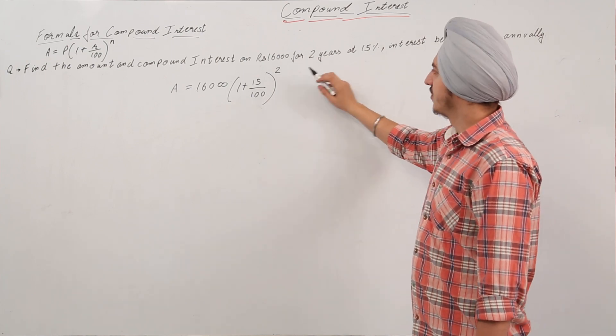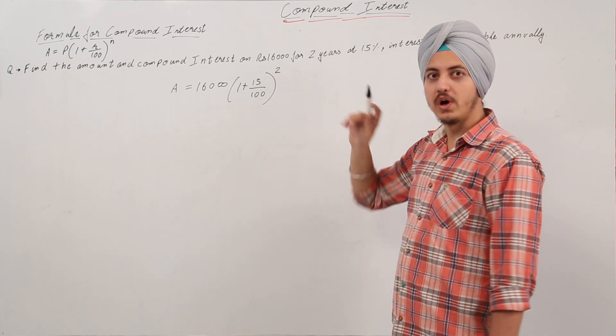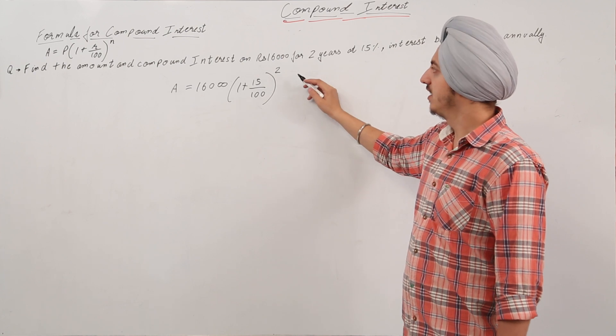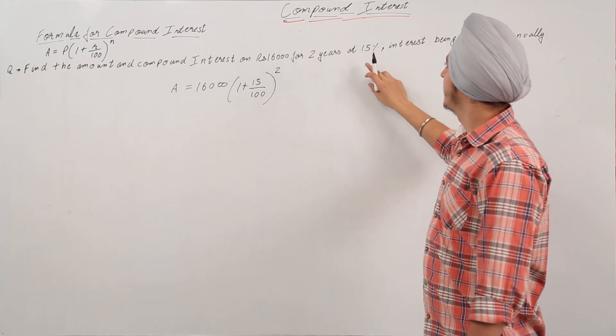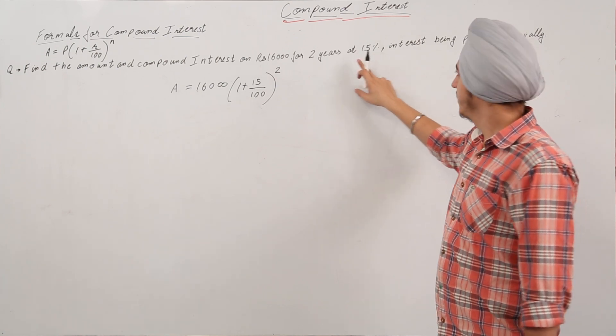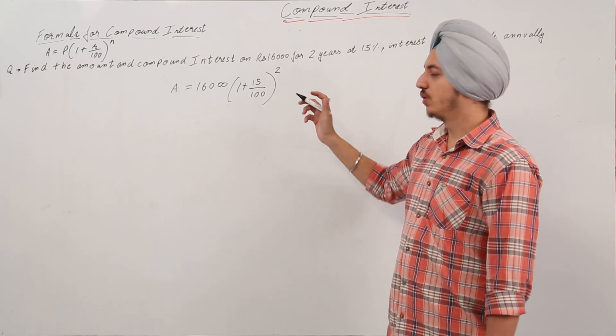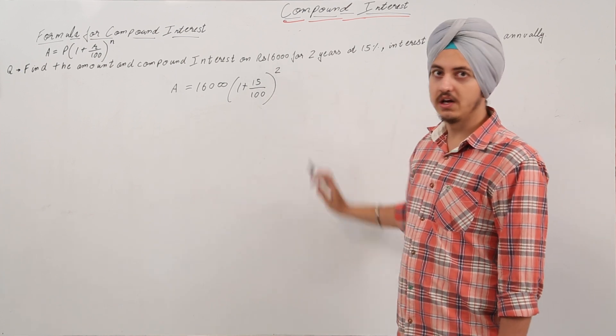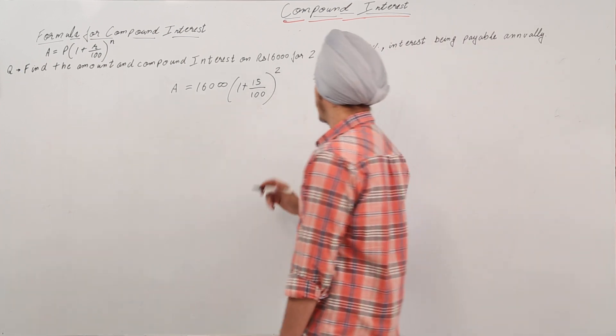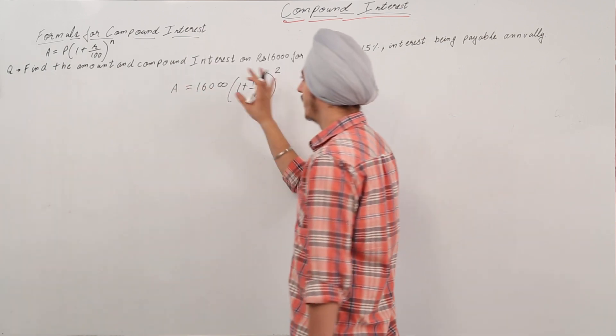So we have the number of years are two, so one conversion period per year means two conversion periods total, and we have 15% interest per annum. So the conversion period is also one, so we have 15 as the rate of interest.